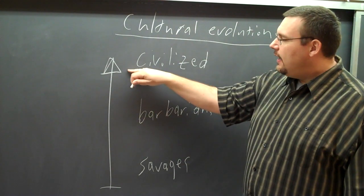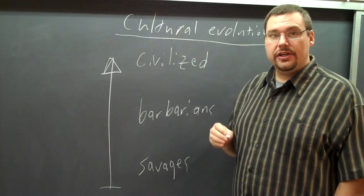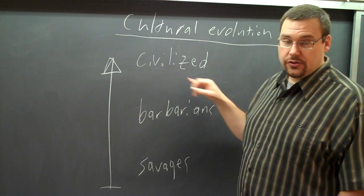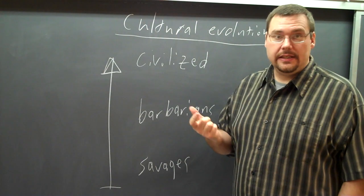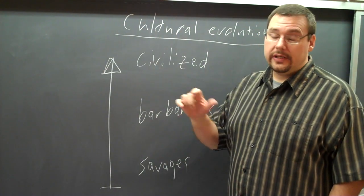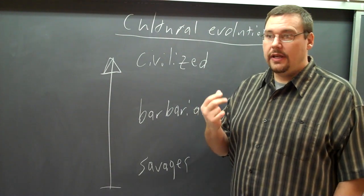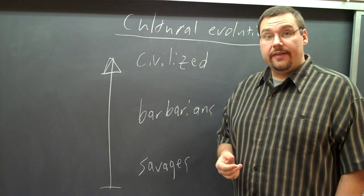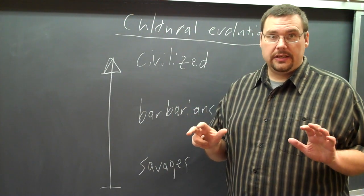Now, what were the things that marked the civilized? Things like high level of organization politically, high level of organization religiously, people living in high population density cities, as opposed to people who were in the barbarian category, living in lower population density, lower level of technology, lower level of family organization, all the way down to savages who had very, very low population density, very, very low level of technology.